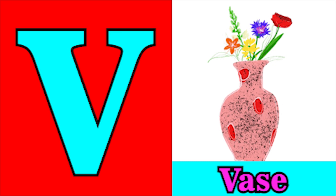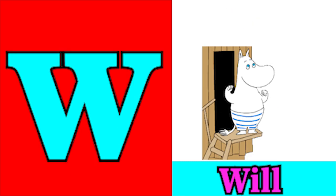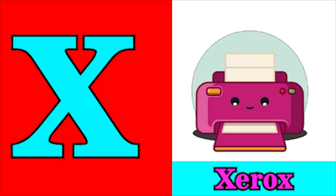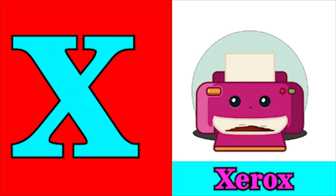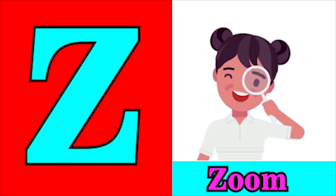V for vase, W for whale, X for zero, Y for yellow, Z for zoo.